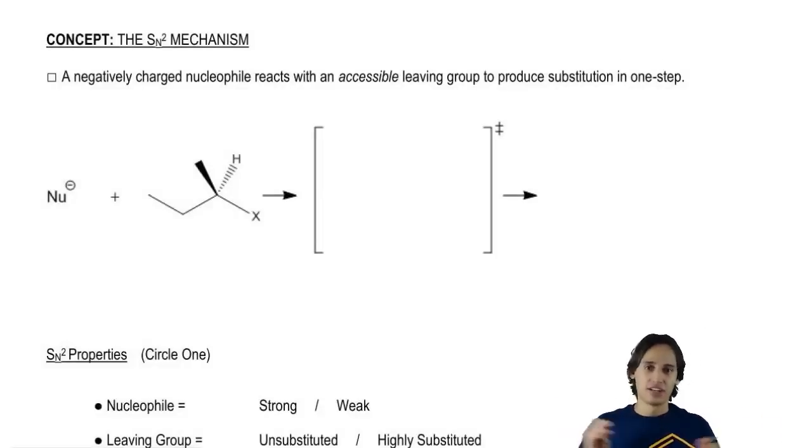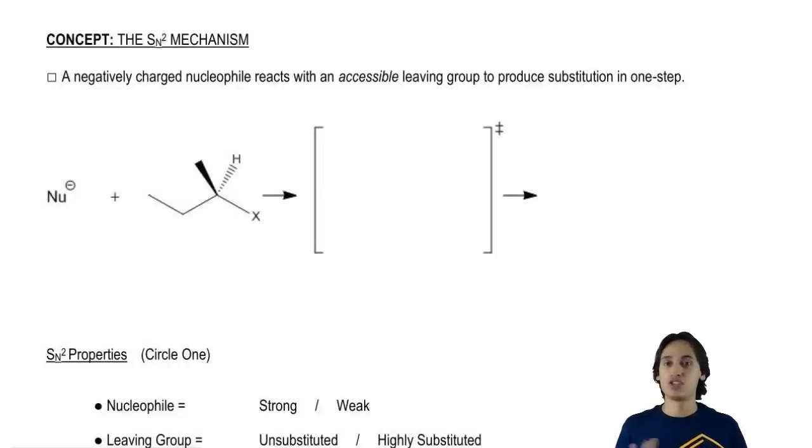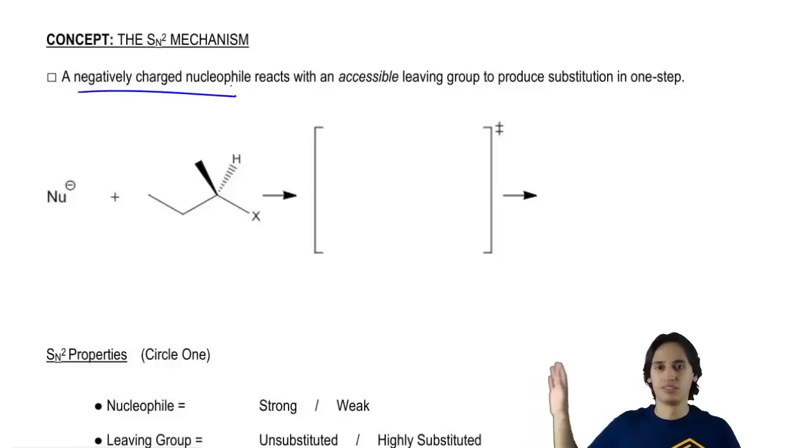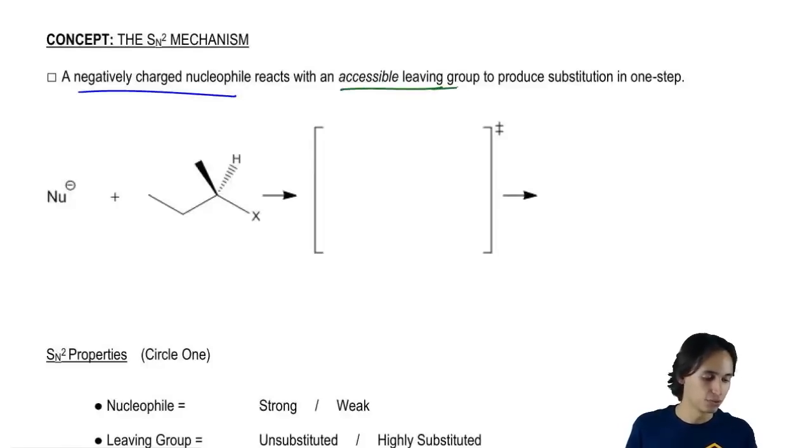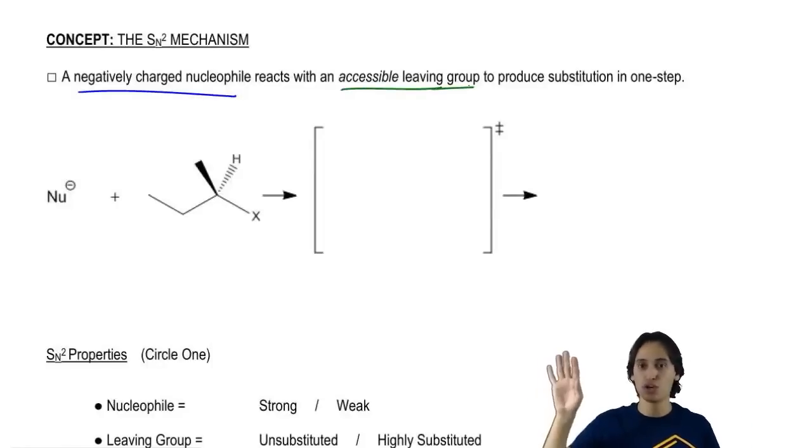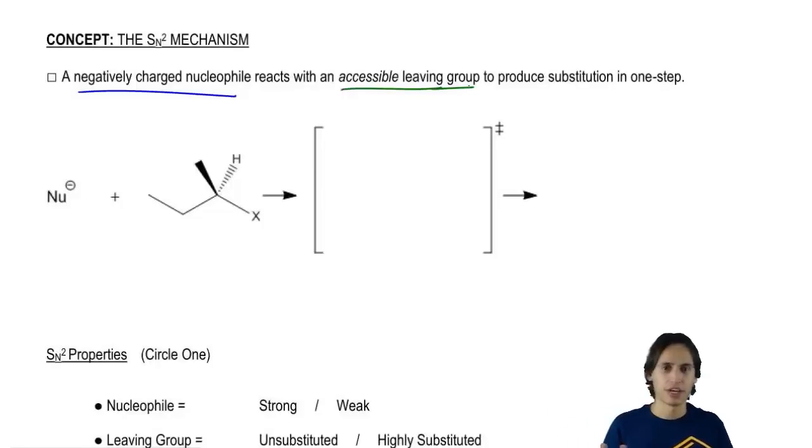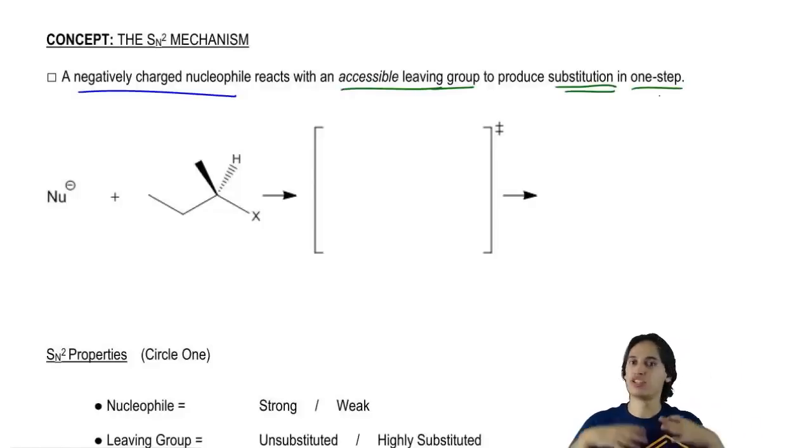If I were to just give it a tagline and say in one sentence what an SN2 mechanism is, it's that a negatively charged nucleophile reacts with an accessible leaving group. Now leaving group, you should know what it is. Accessible maybe you're a little confused but we'll define it. To produce substitution in one step. So let's go ahead, I just want to get right into it. Let's just draw this mechanism out.